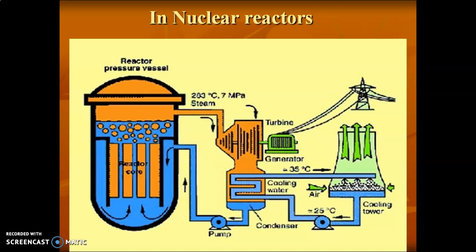In nuclear reactors, we produce electricity using fission and fusion reactions involving nuclear materials such as thorium. The waste materials are dumped into containers made of metallic glasses, which does not allow radiation to flow out. This is the application of metallic glasses in nuclear reactors.